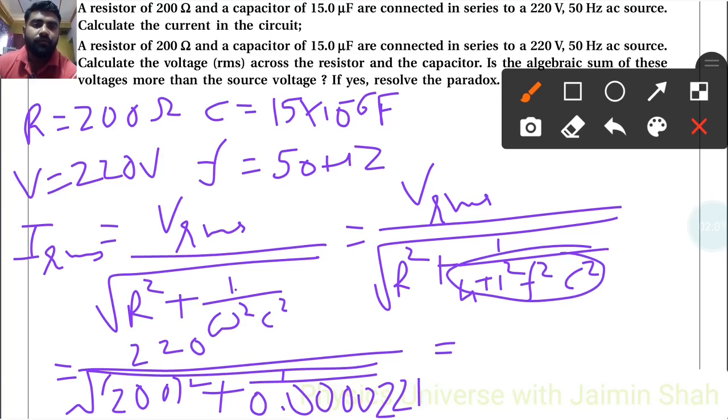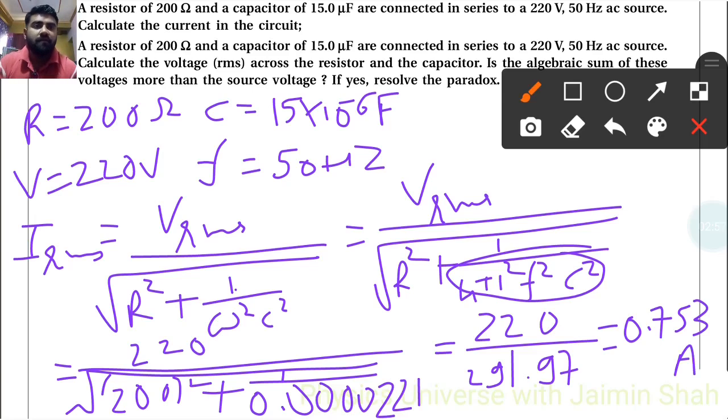The answer will be 2.21 into 10 raised to minus 5, which is 0.000221. Now 200 square, so 200 into 200, and 1 upon that value, 1 upon 0.000221, that is 4524.8. So 4524.8 plus 40,000 and under root of that value. So 220 upon under root of answer is 291.97.